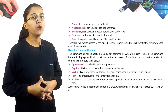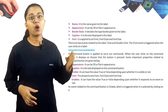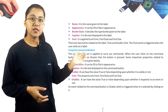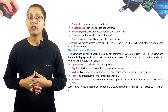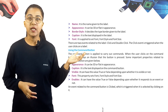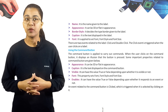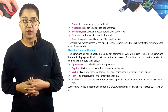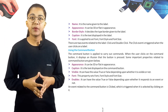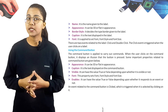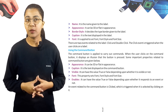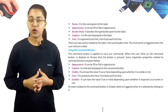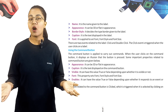Some important properties of a Label are: Name — the name given to the label; Appearance — can be 3D or flat; Border Style — decides the type of border given to the label; Caption — the text displayed in the label; Font — applied to set font, font style, and font size. There are two events related to label: Click and Double Click. The Click event is triggered when the user clicks on a label.